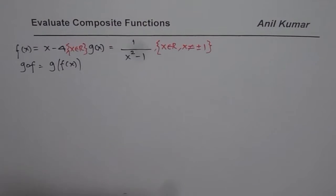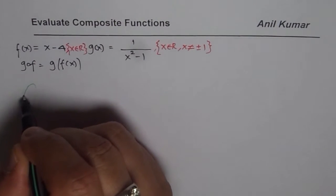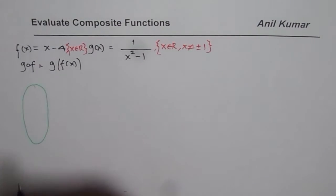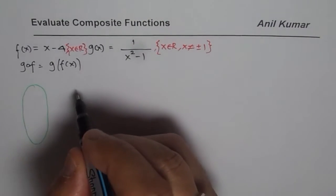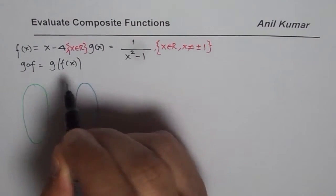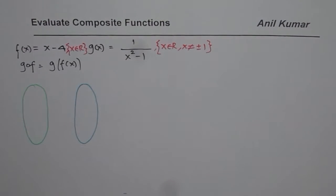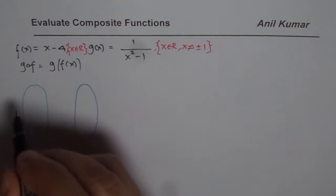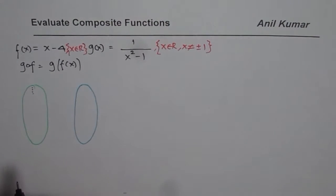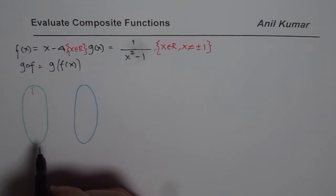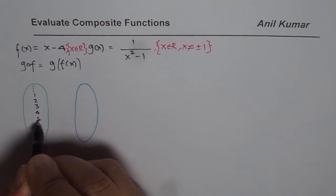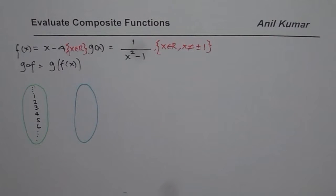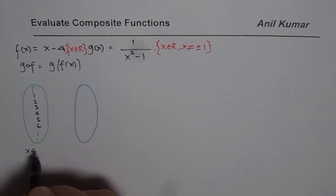Now let us take a set of values to help us understand how to compose this function. We will take the domain of f of x — let us say these are my values: 1, 2, 3, 4, 5, 6, and so on. Domain of f of x is x which belongs to the set of real numbers, but we are just taking a few to understand the concept.